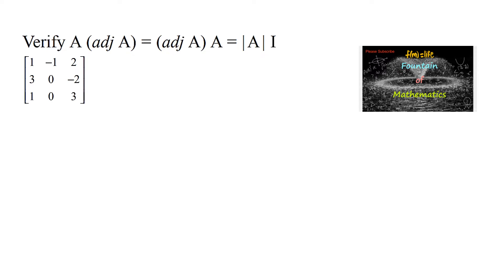Verify that A into adjoint of A is equal to adjoint of A into A is equal to determinant of A times I, where A is the given 3 by 3 matrix: [1, -1, 2; 3, 0, -2; 1, 0, 3]. First, let us find the determinant of A.